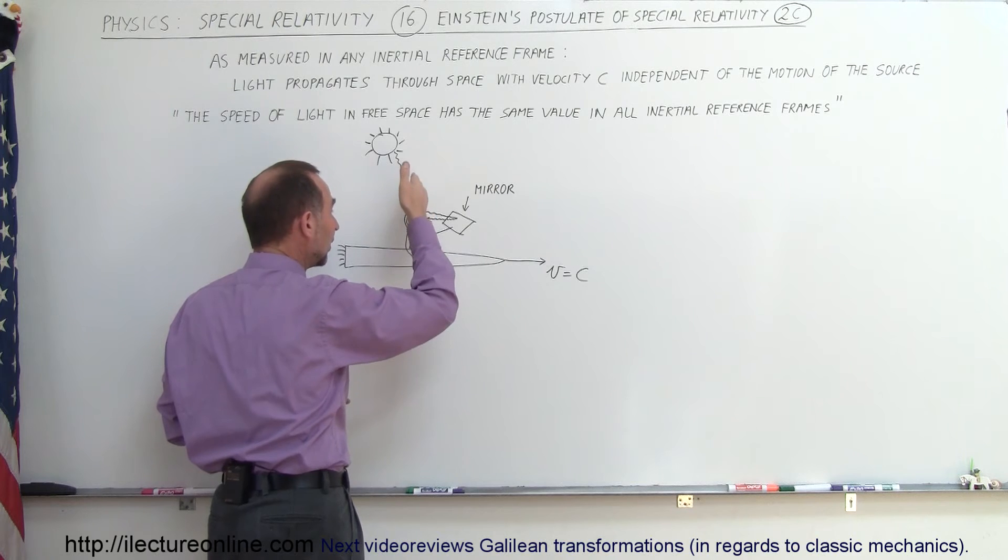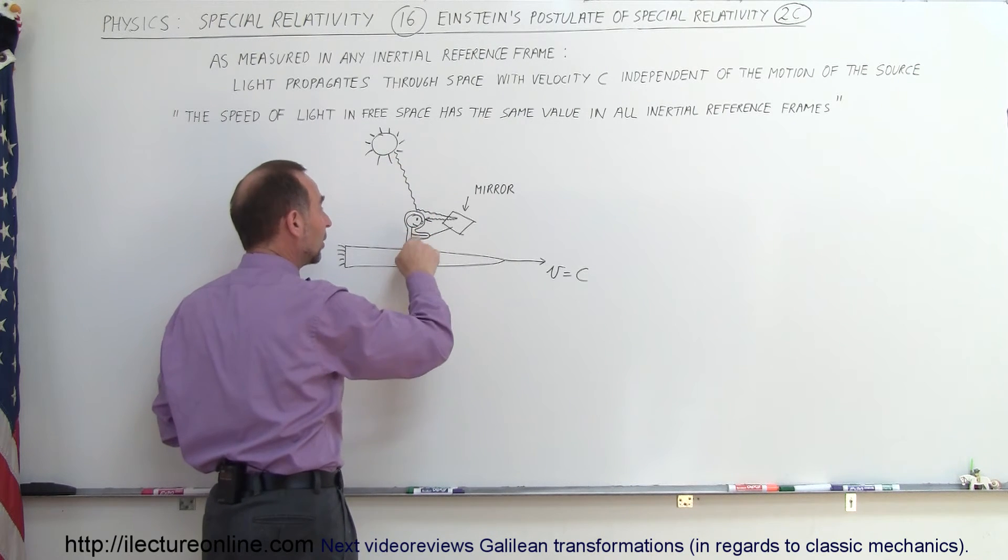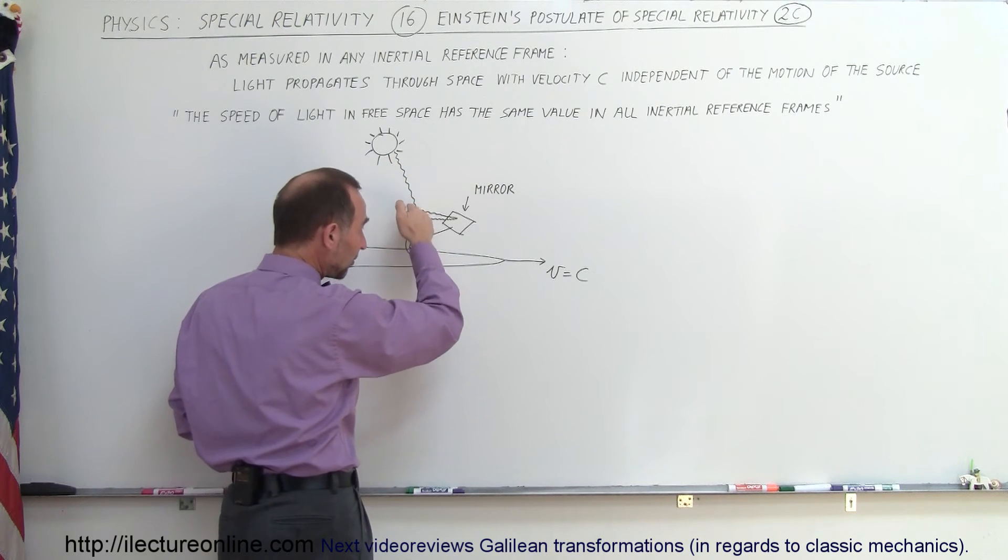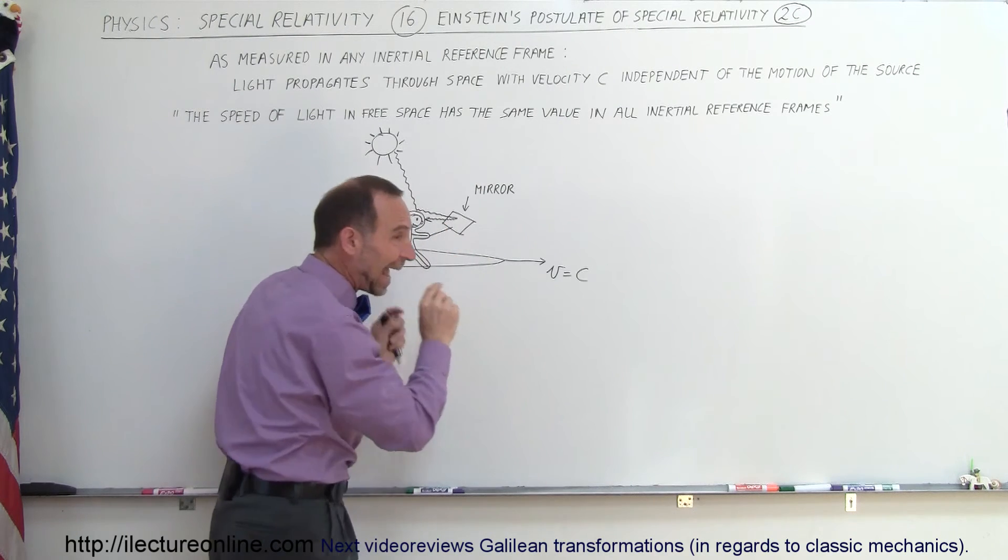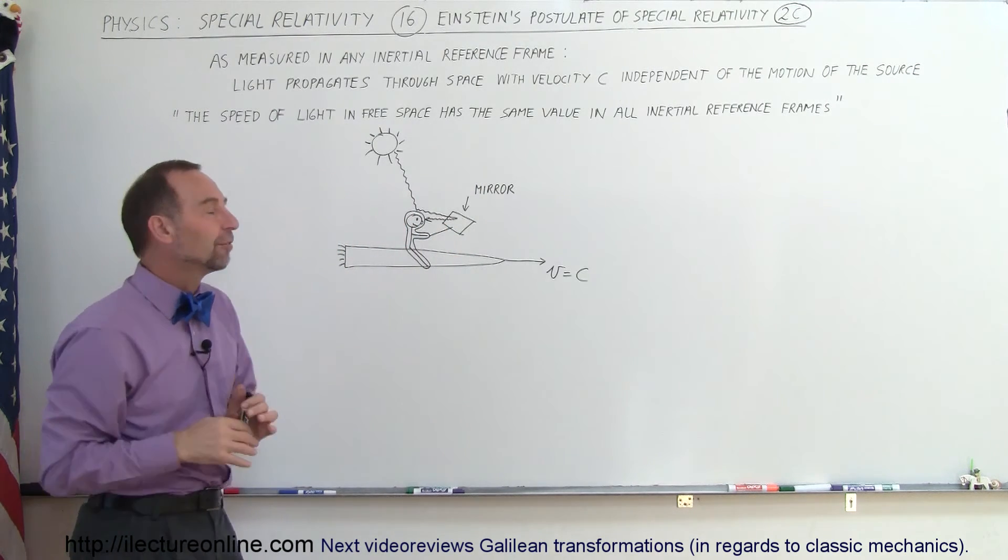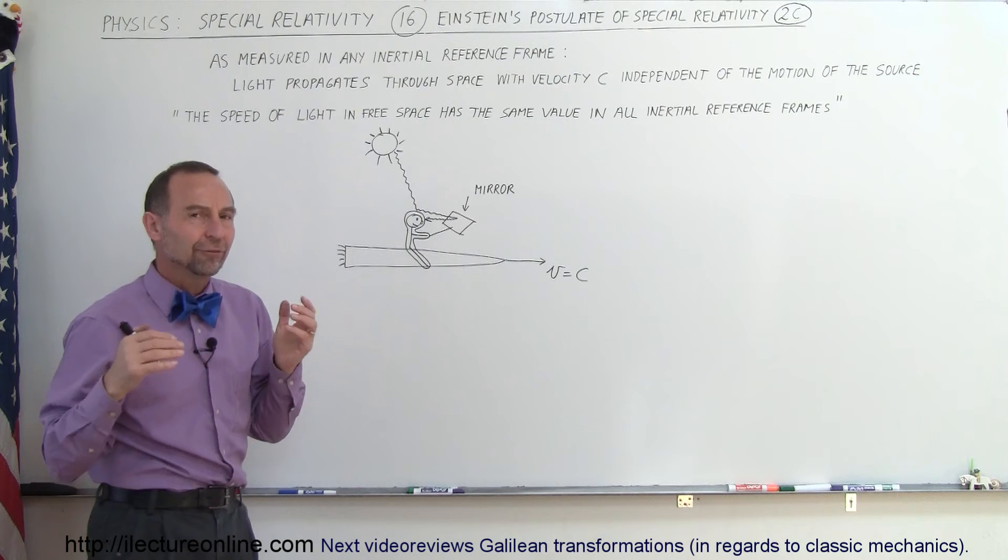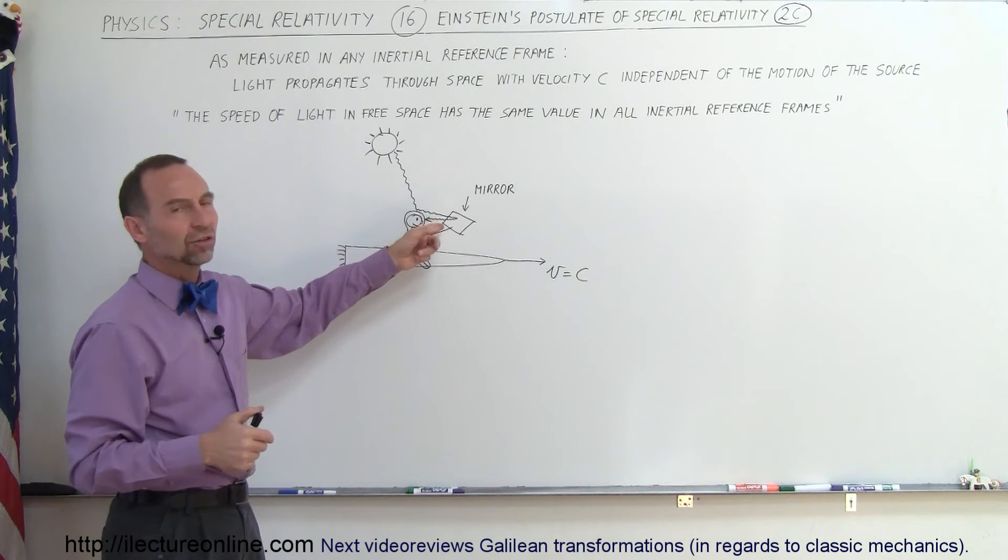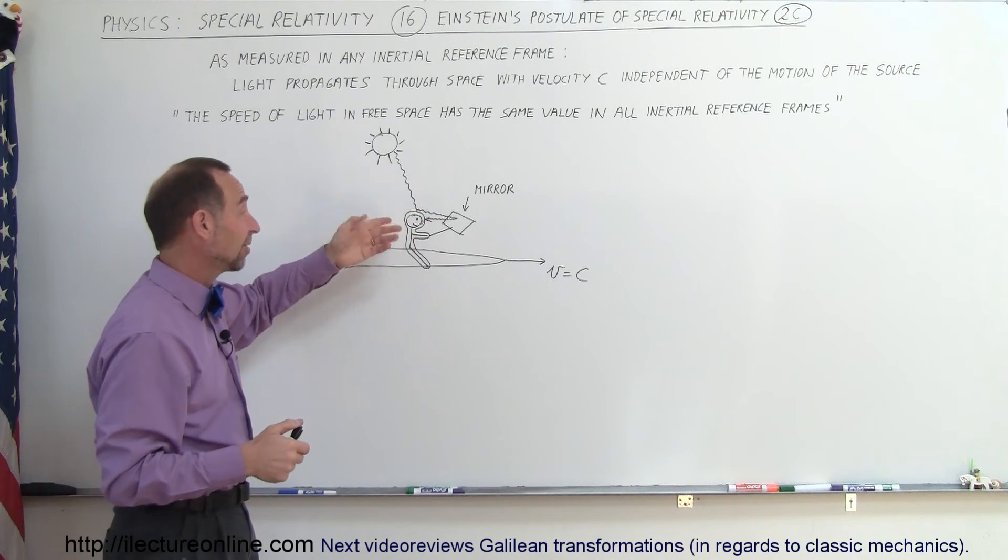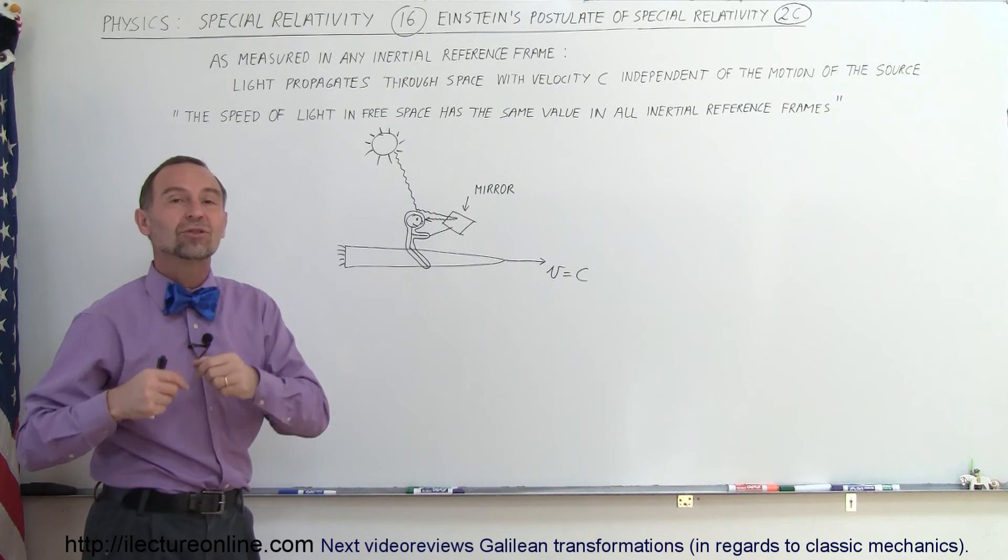Which means that even though the person on the spaceship would be moving at the speed of light, the light would hit the spaceship, would hit the astronaut, it would bounce off the astronaut and would move towards the mirror at the speed of light, no matter what reference frame you're in. Again, very strange concept. No one would initially believe that this would be possible. Einstein said, yes, you would see your image in the mirror.